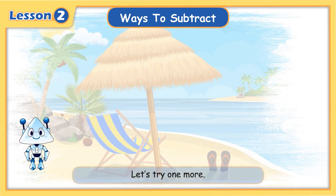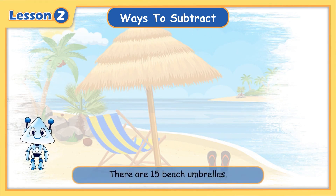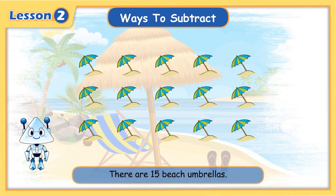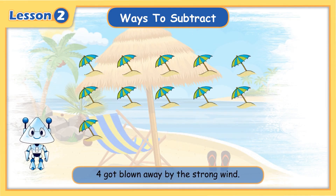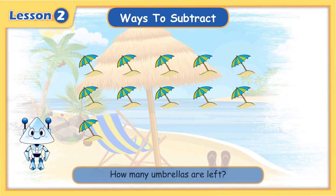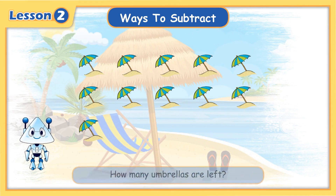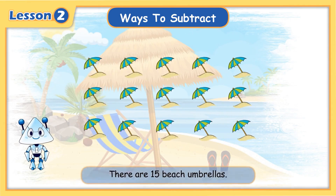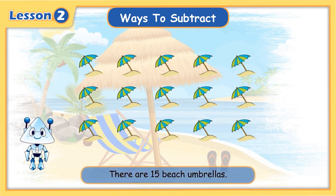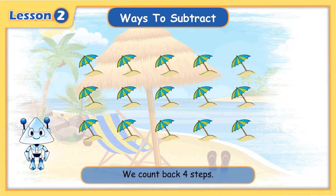Let's try one more. There are 15 beach umbrellas — four got blown away by the strong wind. How many umbrellas are left? There are 15 beach umbrellas, so we count back four steps.